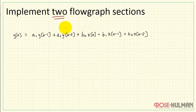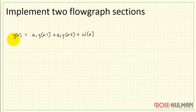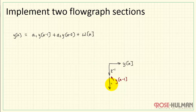To implement this system equation as a flow graph, I'll begin by implementing two subsections. Let me first abbreviate everything associated with our input as w of n — we'll come back to that. I'll begin working on the output here. y of n is the sum of three components. The first is based on a delayed version of y of n, so I'll tap off here — this is y of n. Passing that through a unit delay produces y of n minus 1. We also need y of n minus 2, which we get by passing through yet another unit delay.